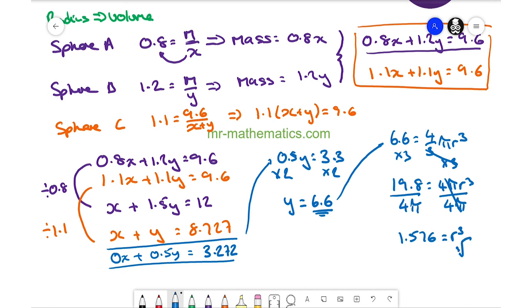Taking the cube root of both sides, the radius of sphere B is approximately 1.16.